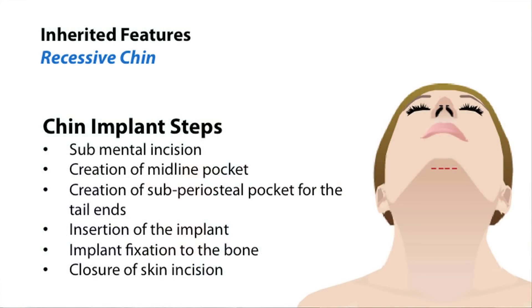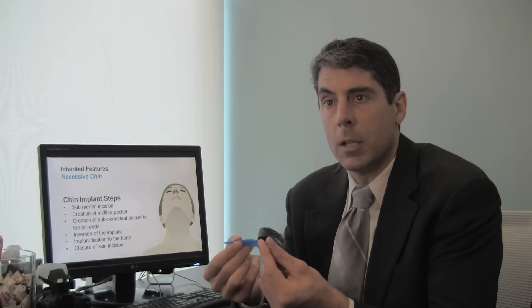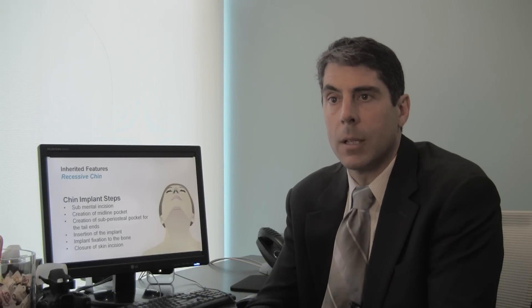Once that's performed, small incisions are placed into the periosteum, and that's the surface layer of the chin. A little pocket is created to accept the tail of the implant on each side, and the tails are inserted into those pockets. That allows the implant to sit in the midline, and then it's secured in place with stitches.